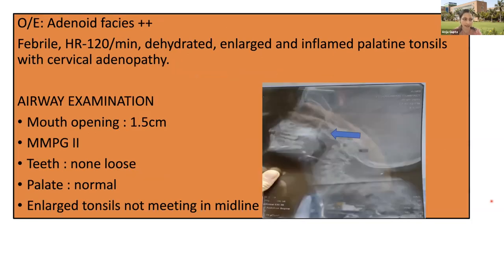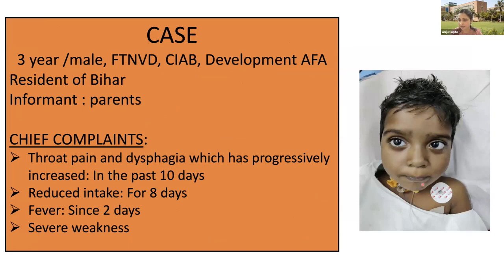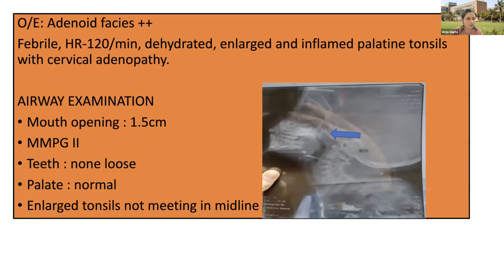On examination, the child had adenoid facies with typical features including flattened mid-face and prominent eyes. The child was febrile and had tachycardia. He was dehydrated. There were enlarged and inflamed palatine tonsils which could be easily seen, and there was cervical adenopathy with palpable cervical lymph nodes. On X-ray head and neck, enlarged adenoids were seen with a soft tissue shadow in the nasopharynx. Airway examination showed mouth opening of 1.5 cm, Mallampati grade 2, no loose teeth, and normal palate but enlarged tonsils not meeting in midline.